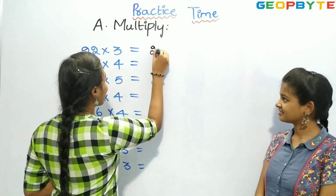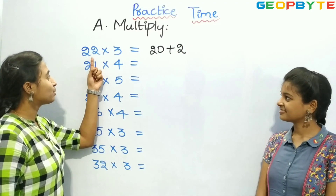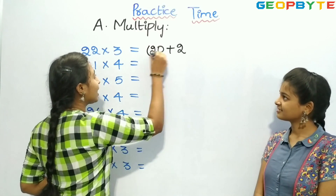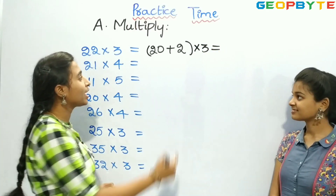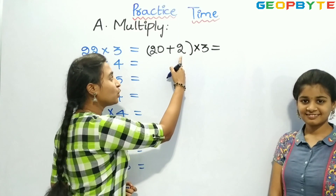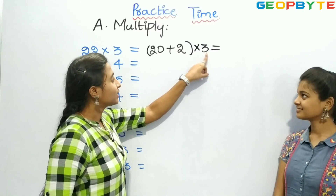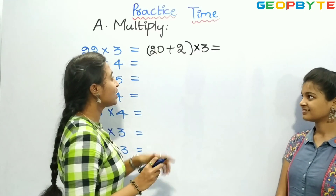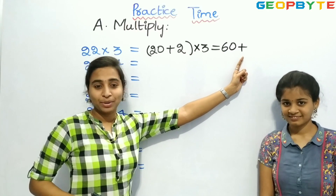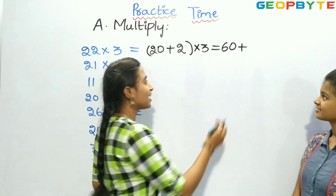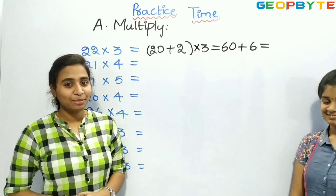So 22 can be split as 20 plus 2. Now we need to multiply 20 with 3 and 2 with 3. First, let us multiply 20 with 3. 3 twos are 6, and we have a 0, so it is 60. Plus, 3 twos are 6. So 60 plus 6 is nothing but 66.